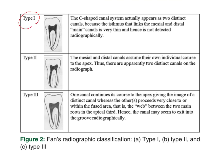The first type — type 1 — actually appears as two distinct canals, meaning the mesial and distal canals appear separate. Because there can be a confluence of the distal with the mesiobuccal or mesiolingual, ideally it should look like a single canal. However, in type 1, they appear as two distinct canals because the isthmus linking the mesial and distal main canal is very thin, and as a result it does not appear clinically distinct on the radiograph.